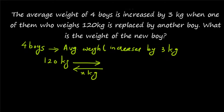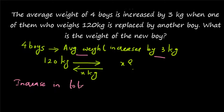You have to find out what is x, or what is the weight of the new boy. The basic approach is: the increase in average weight is given. So what is the total increase in weight? Always, total is equal to average into number of data. So that is how we can find out the total.